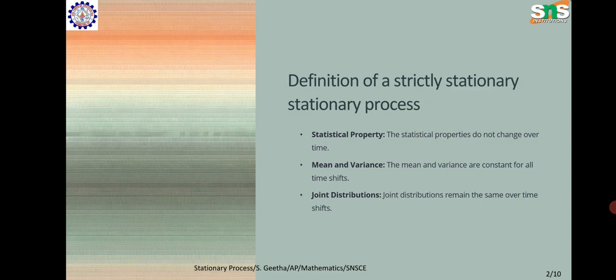Definition of a strictly stationary process. Statistical property: The statistical properties do not change over time. Mean and variance: The mean and variance are constant for all time shifts. Joint distributions: Joint distributions remain the same over time shifts.